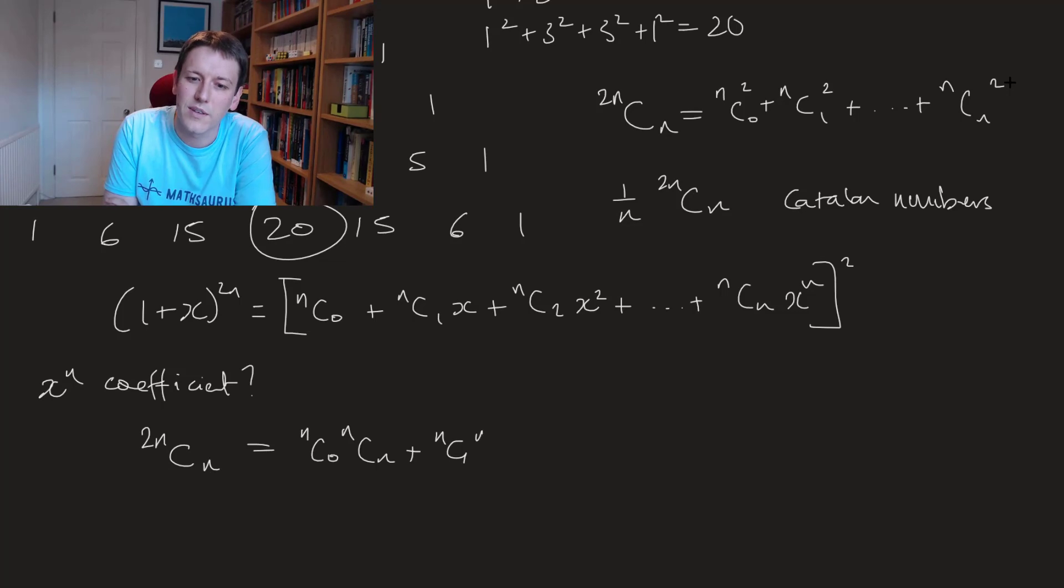And I'm going to keep going here until I get to the n so eventually I'll get to one that's n choose n minus 1 and then times n choose 1 and finally I'll have n choose n times n choose 0. So this would be the coefficient of x to the n if you multiplied all of this out so it must be equal to the coefficient of x to the n on the left hand side.